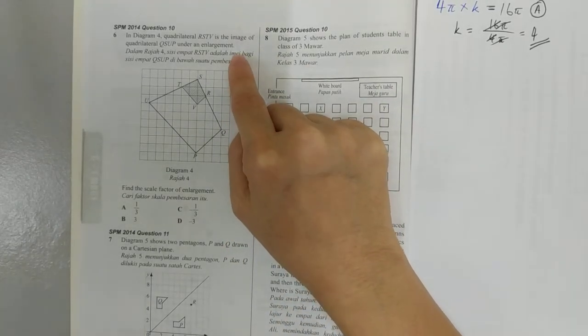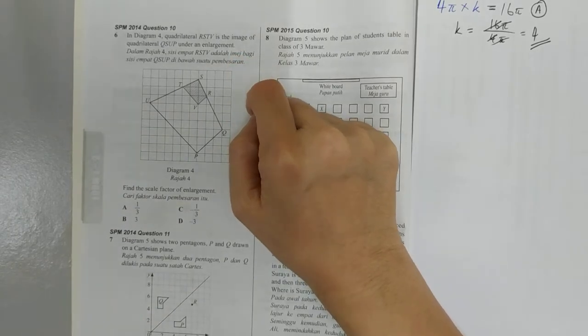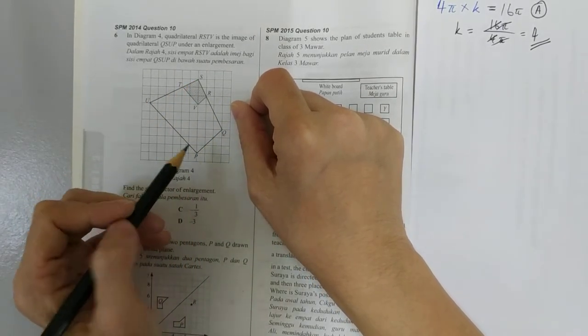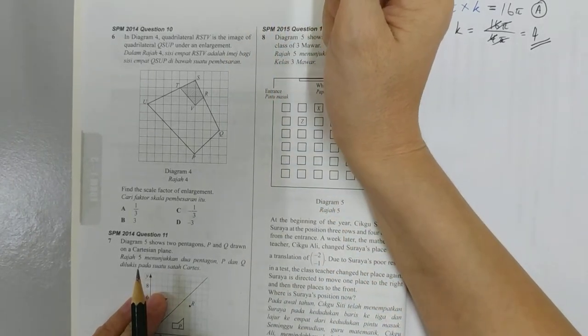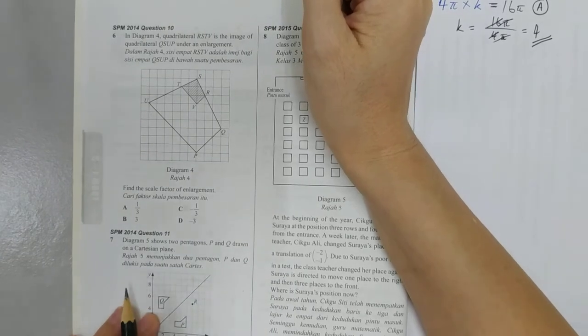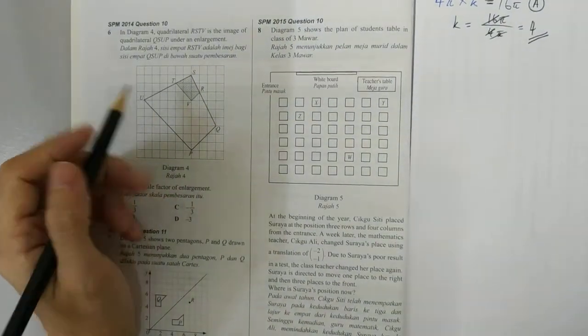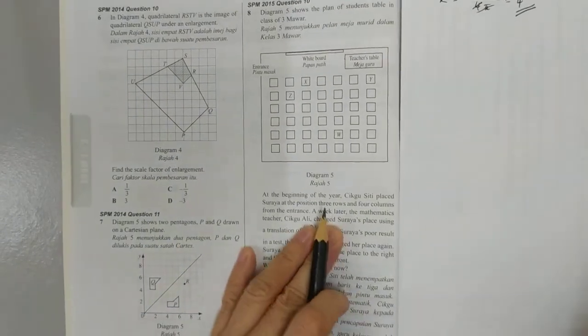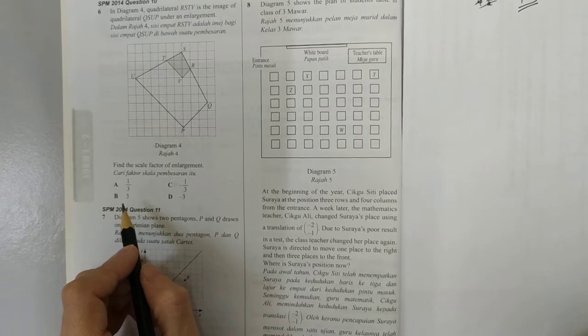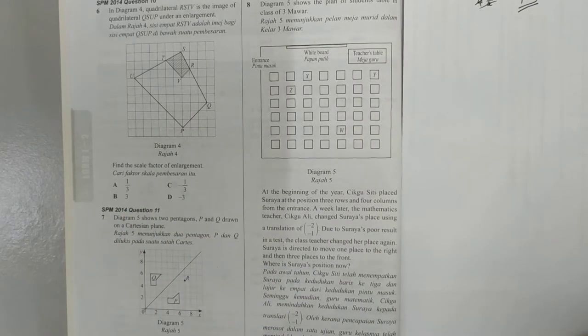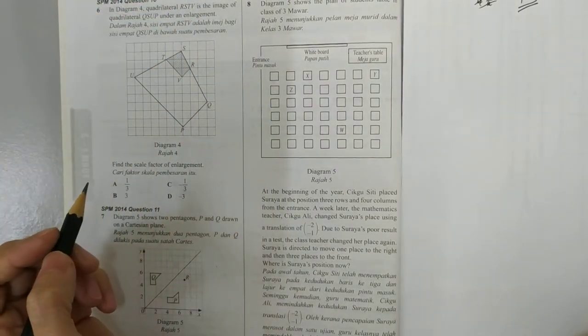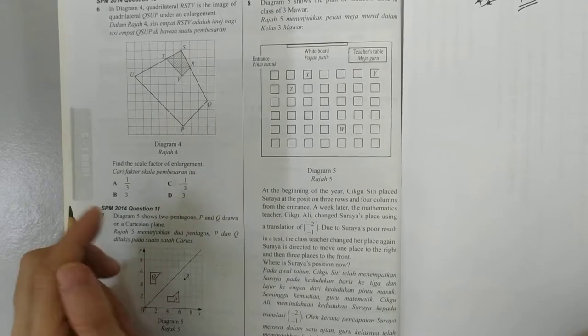Let's look at Question 6. In diagram 4, quadrilateral RSTV is the image of quadrilateral QSUP under an enlargement. Find the scale factor of enlargement. So this is kind of easy. Now, the small one is the image. That means the number can never be bigger than 1. So B is out. It's not a negative because if it's a negative then it will be on the other side. So negative 3 is out and negative 1 over 3 is out. So your answer is 1 over 3.